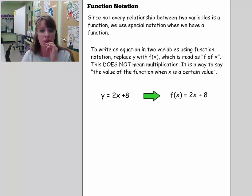We talked yesterday about how not every relationship between two variables is a function. Sometimes they're just relations and they're not functions. Functions are really particular ones where each element in the domain is sent to exactly one element in the range. Since this is the case, we use special notation when we have functions.